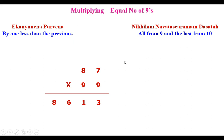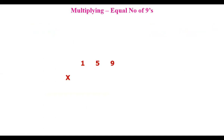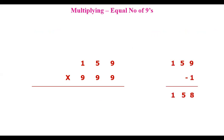Let's see another example: a three-digit number multiplied with triple nines. Take 159 × 999. First, Ekanyunena Purvena: 159 minus 1 is 158. Put this on the leftmost side. Next, Nikhilam Sutra: 10 minus 9 is 1, 9 minus 5 is 4, 9 minus 1 is 8. So 159 × 999 = 158,841.